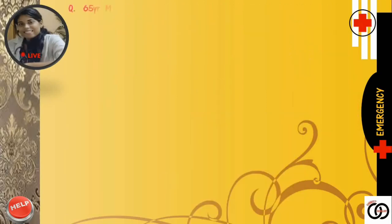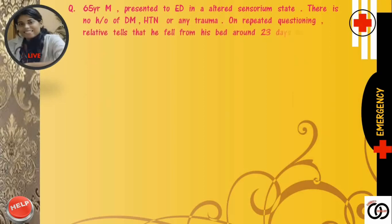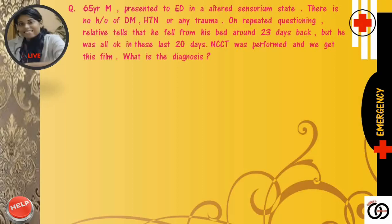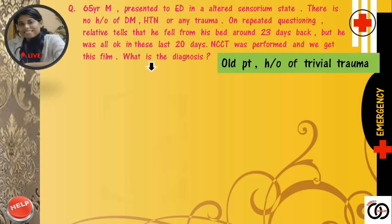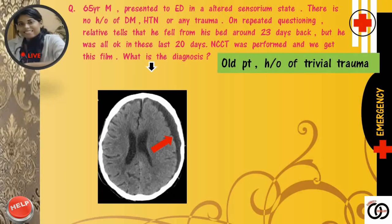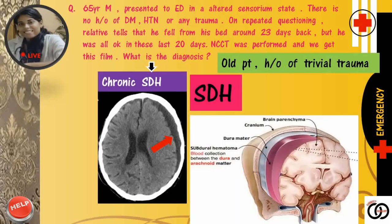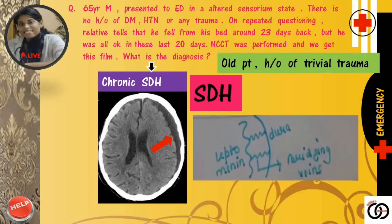Now see the second question. A 65-year-old male presented to the emergency department in an unconscious state. There is no history of diabetes mellitus, hypertension or any trauma. On repeated questioning, the relative tells that he fell from his bed around 23 days back, but was all okay in the last 23 days. NCCT was performed. See the NCCT scan — appreciate the crescent-shaped hyperdense area. This is a case of chronic subdural hematoma. This subdural hematoma is not limited by sutures but it can't cross the midline as it is restricted by dural folds, e.g. falx cerebri. This is due to the rupture of the bridging veins.